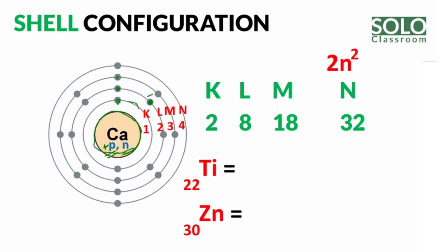Multiple shells arrange the electrons. The first shell is K, and the shells are named K, L, M, N. The maximum number of electrons is determined by a formula. K has a maximum of 2 electrons, L is 8, M is 18, and N is 32.